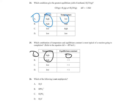Question 26 asks which species is not amphiprotic. Amphiprotic means a particle can both donate and accept a proton. Water can donate H⁺ to form OH⁻ or accept H⁺ to form H₃O⁺ — amphiprotic. The hydrogen carbonate ion has an H⁺ to donate and a negative charge to attract one — amphiprotic. The same applies to H₂PO₄⁻. However, the hydronium ion H₃O⁺ has a positive charge — it cannot easily accept another proton — it can only donate. Therefore H₃O⁺ is not amphiprotic and is the answer.